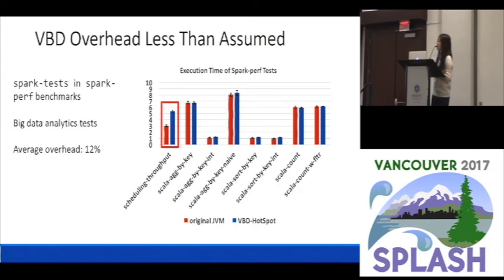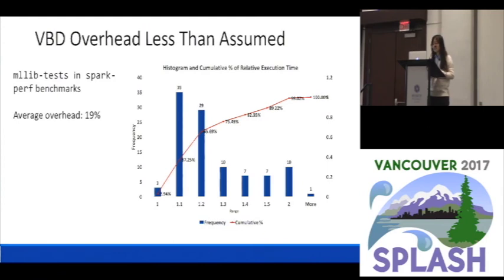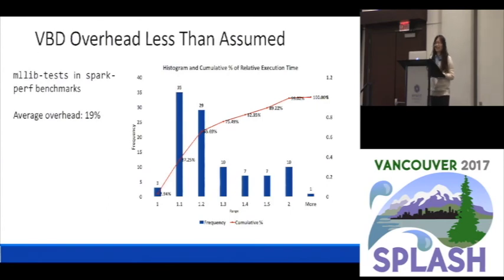But even with this outlier, the average overhead is only 12%. We did a similar test for machine learning benchmarks — still using the Spark performance benchmark and the MLlib tests. MLlib is a commonly used machine learning library in Scala. You can find more details in the paper, but the key idea is that the average overhead over more than 100 tests in these benchmarks is only 19%. I would say this is less than people have previously assumed.